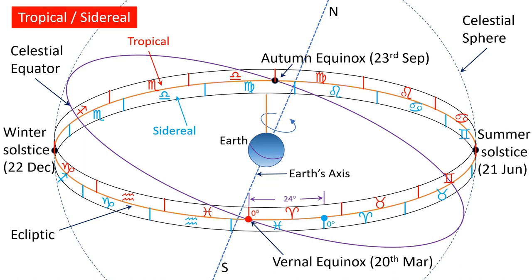So as it stands today, the 0 degree Aries or Mesh Rashi of the tropical or Sayana zodiac coincides roughly with 6 degrees of Pisces or Meen Rashi of the sidereal or Nirayana zodiac. As the Earth rotates around its axis, the direction of Earth's axis of rotation changes, and it slowly makes a sweep-like motion similar to that of a spinning top, and this is called the precession of equinoxes.